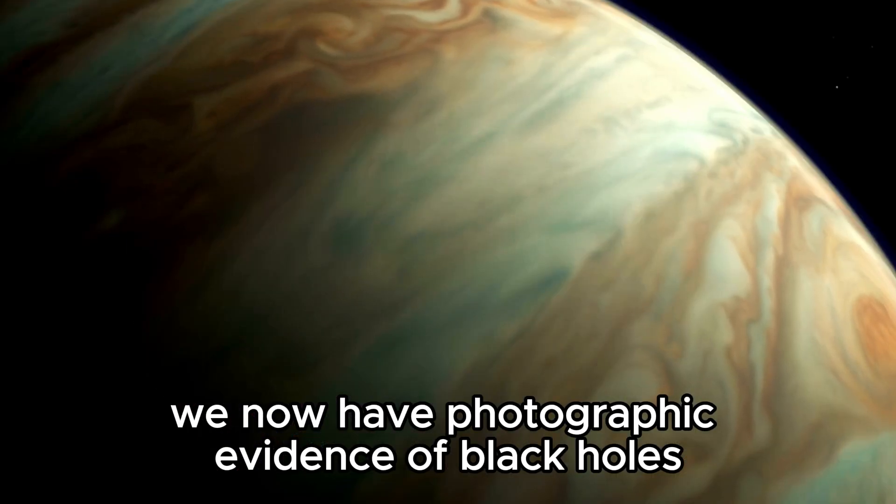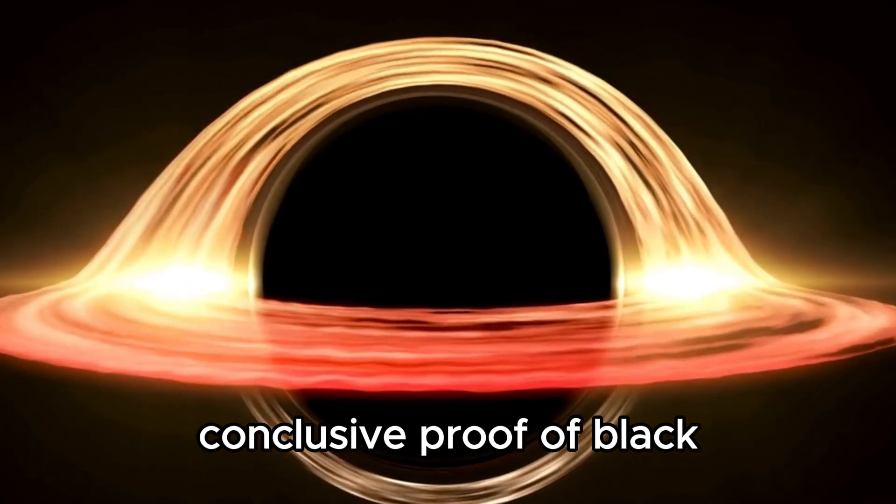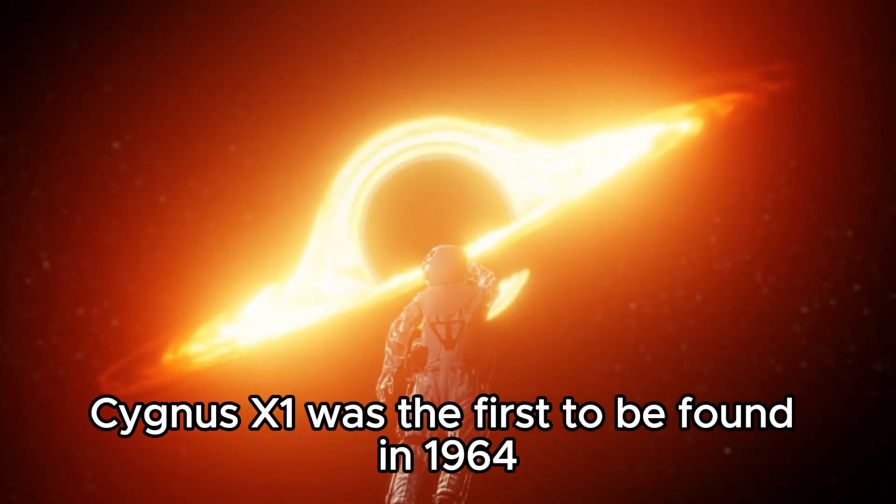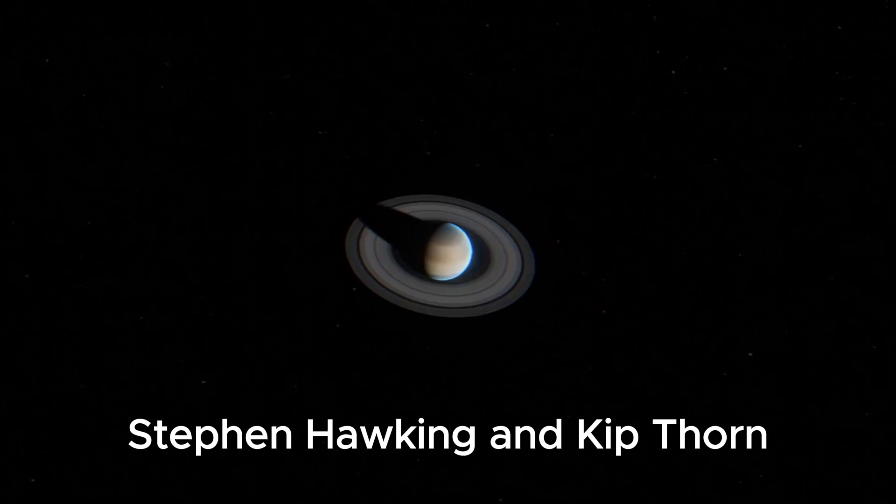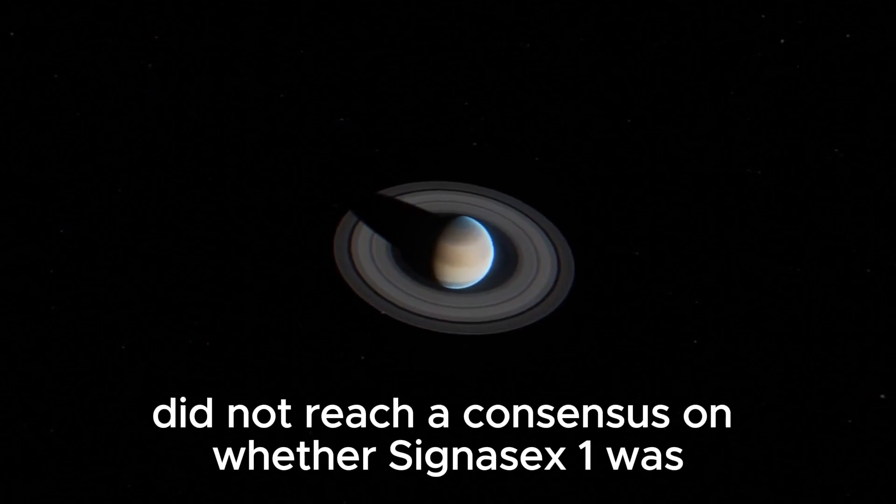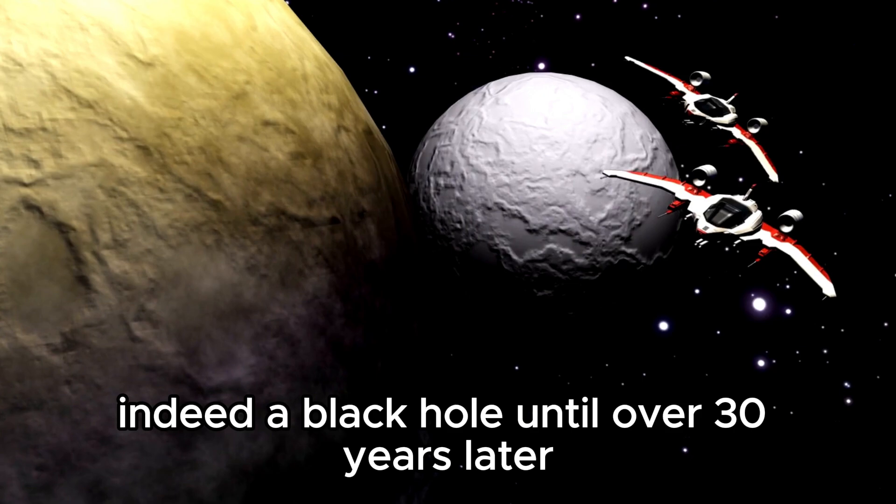We now have photographic evidence of black holes, so we know they exist. However, conclusive proof of black holes has been lacking for quite some time. For scientists, Cygnus X-1 was the first to be found in 1964. Stephen Hawking and Kip Thorne, two foremost authorities on black holes, did not reach consensus on whether Cygnus X-1 was indeed a black hole until over 30 years later.